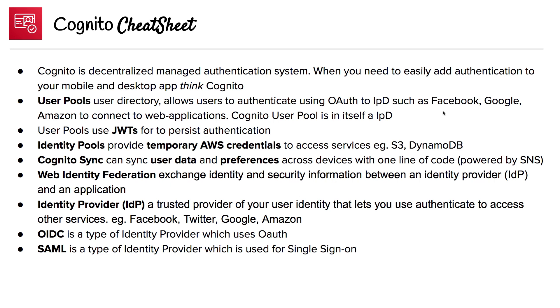Identity pools provide temporary AWS credentials to access services such as S3 or DynamoDB. Cognito Sync can sync user data and preferences across devices with one line of code, powered by SNS.